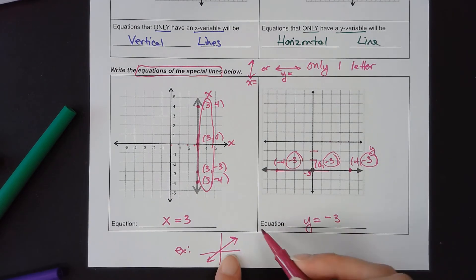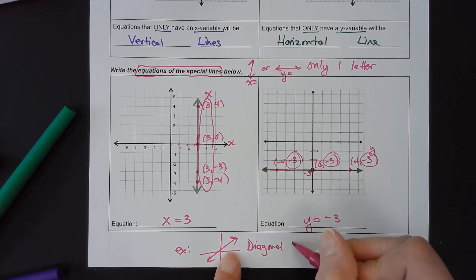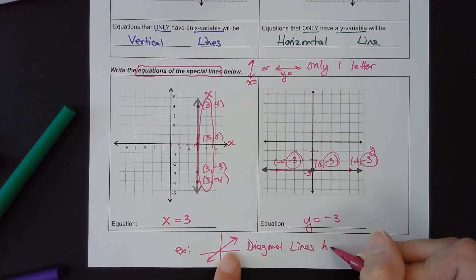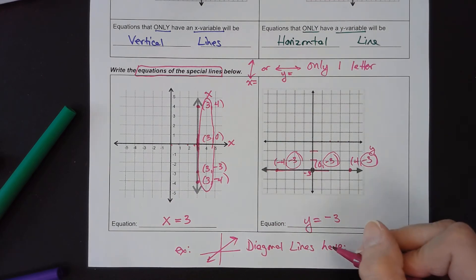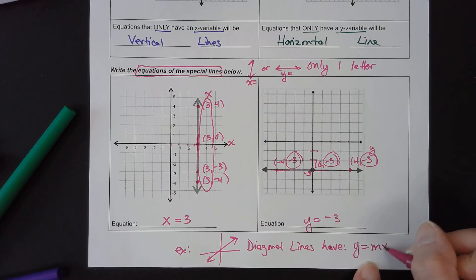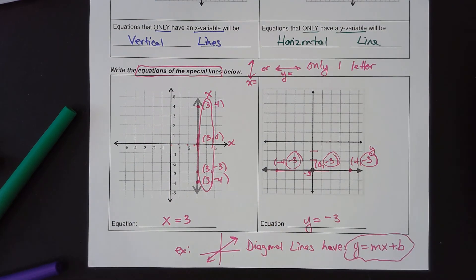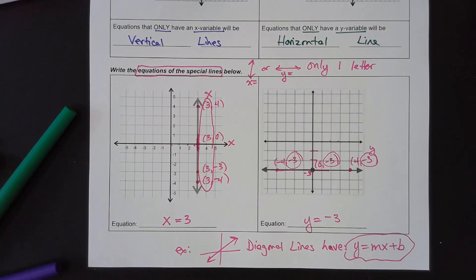If you have a line that is diagonal, those are diagonal lines. Diagonal lines have both letters — they're going to have y equals mx plus b, with two letters. But if you're a special line, you're only going to have one letter. We're going to have some practice in our packet on this. Thanks for watching.